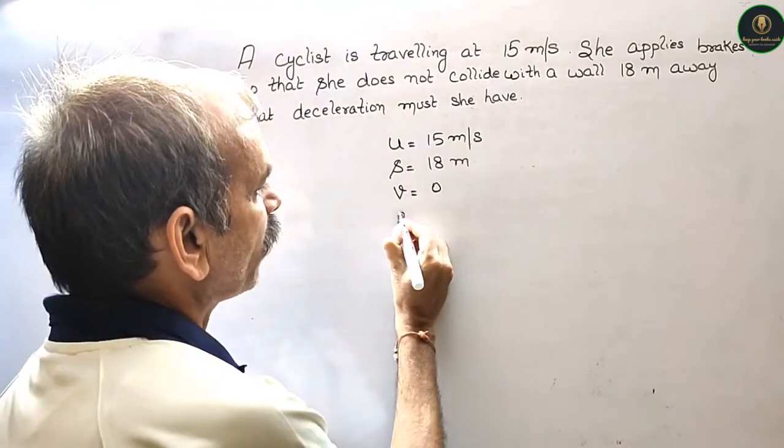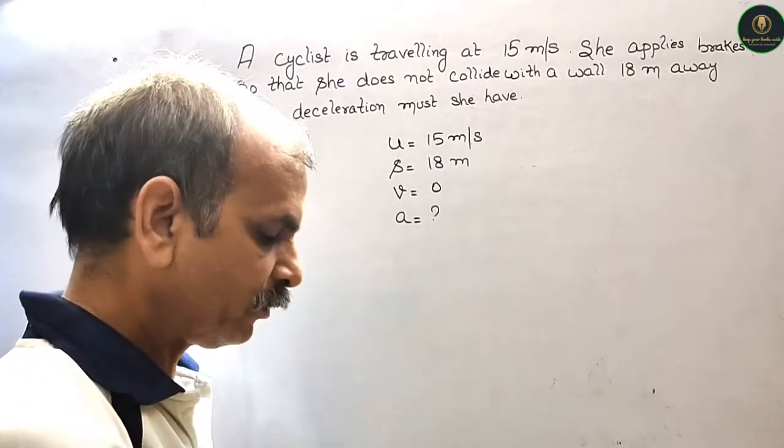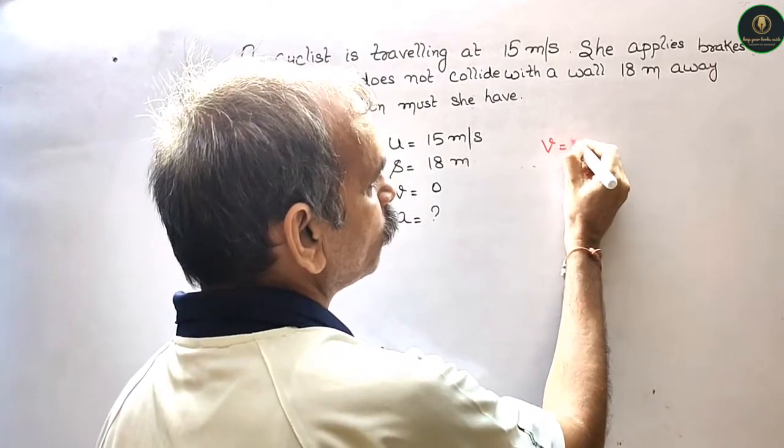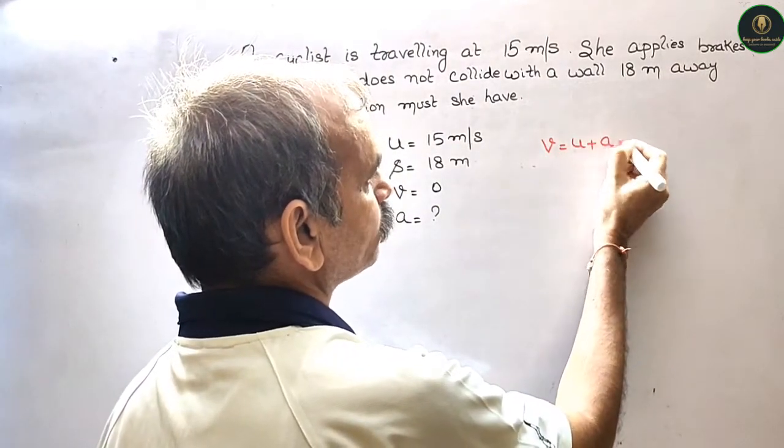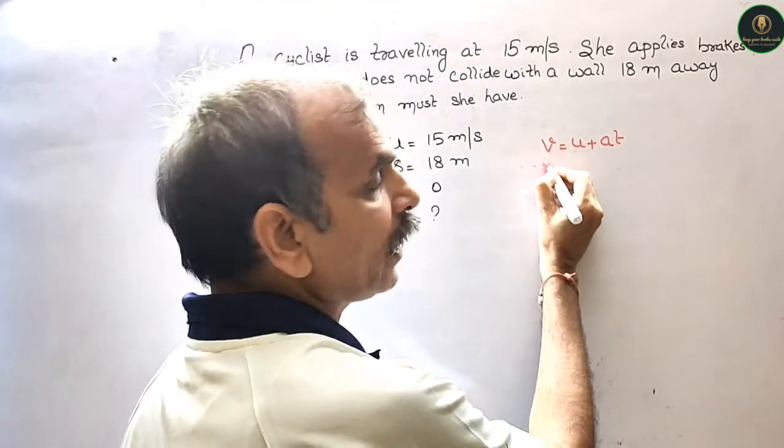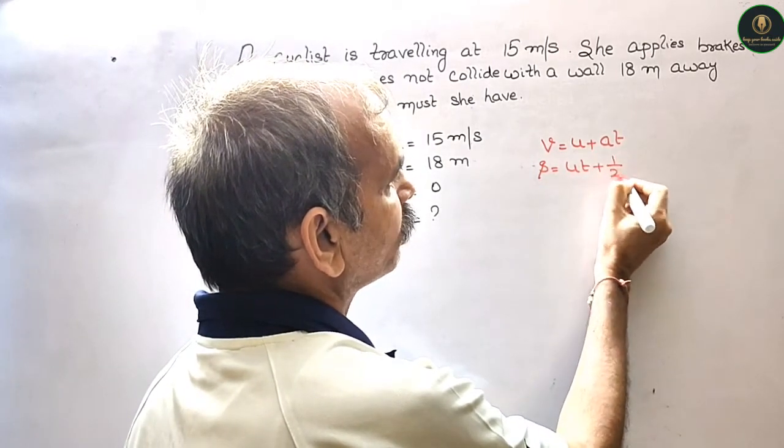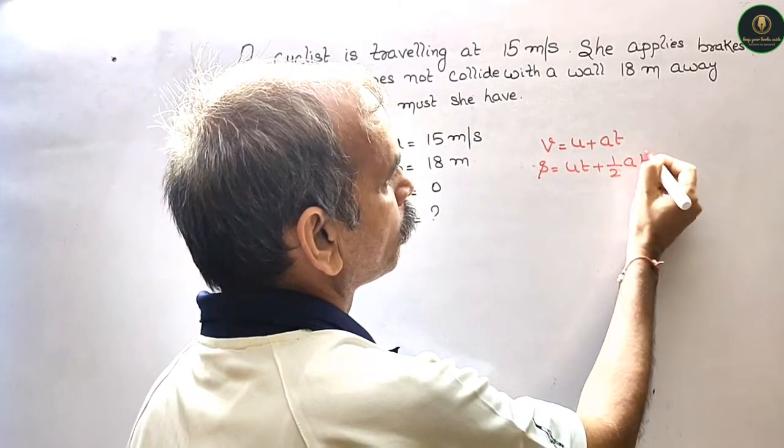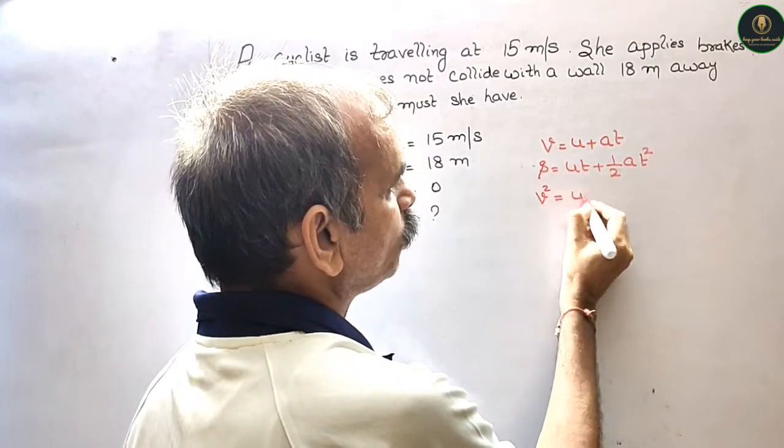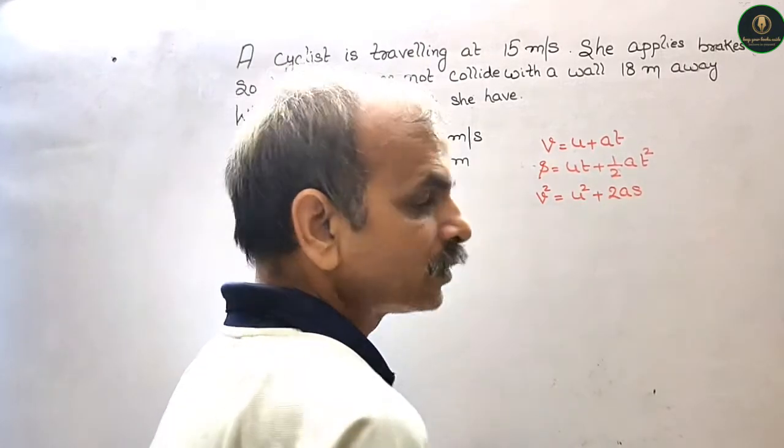So we have to find out A. Now so we have three equations. V is equal to U plus AT. Second one is S is equal to UT plus half AT square. And third one is V square is equal to U square plus 2AS.